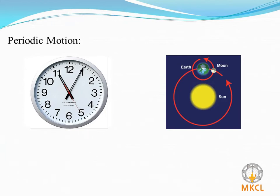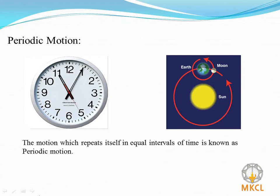We know that minute hand of a clock completes one rotation in 60 minutes. Earth completes one rotation around the sun in 365 days. Moon completes one rotation around the earth in 27.3 days. In all these examples, motion is repeated after a specific time. The motion which repeats itself in equal intervals of time is known as a periodic motion.